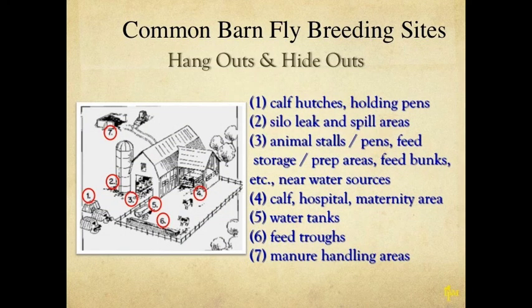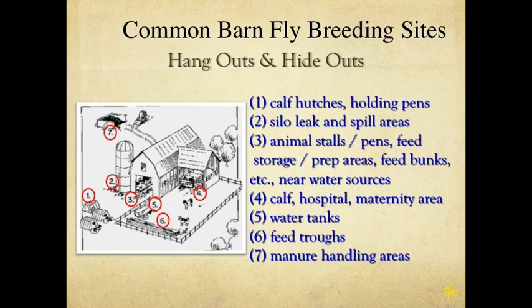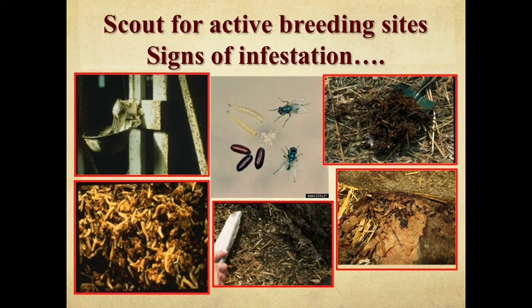Let's look at potential fly breeding places, thinking about undisturbed moist organic matter. Organic matter standing in water is not a good site, nor is organic matter in very dry conditions, but a certain amount of moisture is needed. Common areas in and around the dairy facility include calf hutches and holding pens, areas around silo leaks and spill areas, animal feed spilled onto the ground, animal stalls, pens, feeding storage areas, preparation areas, feed bunks near water sources, calf and hospital and maternity areas, the base of water tanks with organic matter, edges and sides of feed troughs, and manure handling areas.